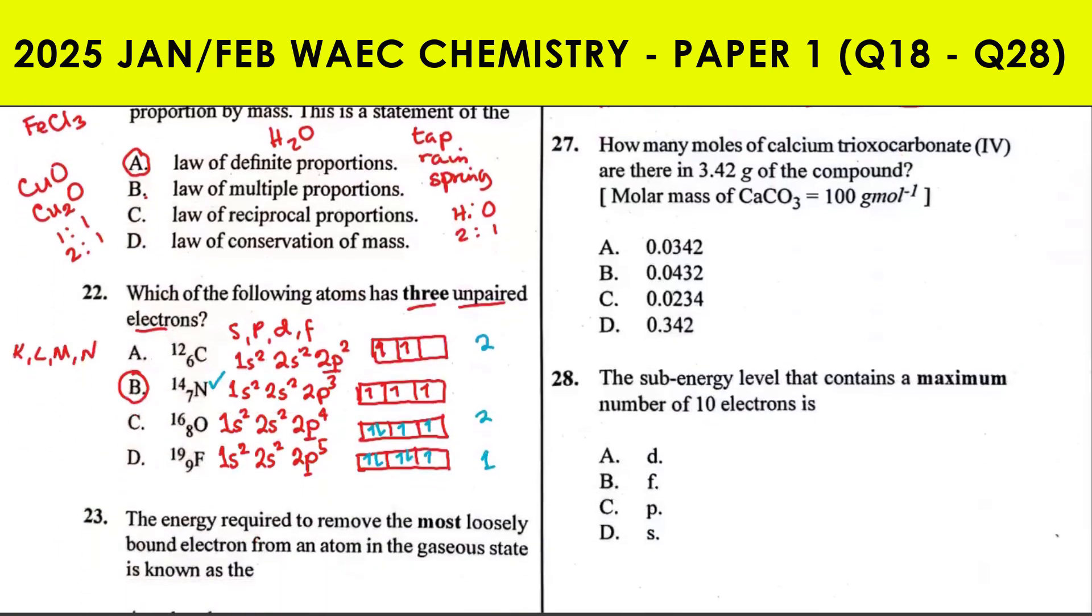Question 27: how many moles of calcium trioxocarbonate(IV) are there in 3.42 grams of the compound? The molar mass of calcium carbonate is 100 grams per mole. How do you calculate number of moles? Number of moles is mass over molar mass. The mass is 3.42, molar mass is 100. 3.42 divided by 100 gives you 0.0342, which is the answer.